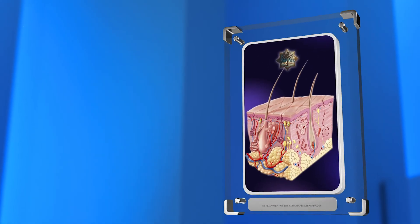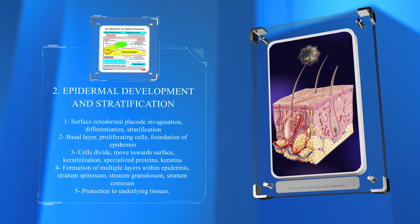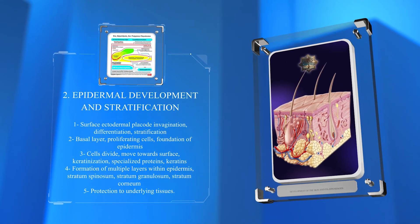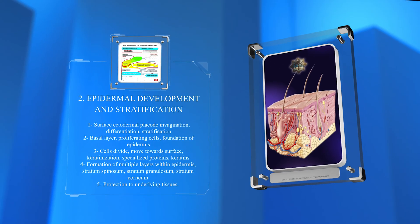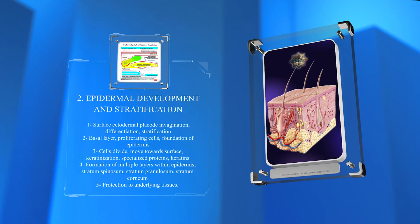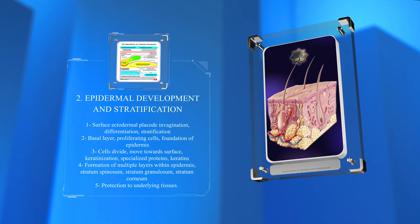Once the surface ectodermal placode invaginates, it undergoes further differentiation and stratification. The basal layer, composed of proliferating cells, forms the foundation of the epidermis. As these cells divide, they progressively move towards the surface, undergoing keratinization and producing specialized proteins called keratins.